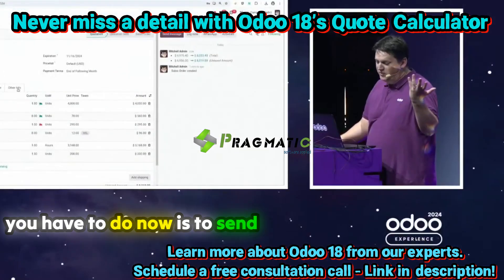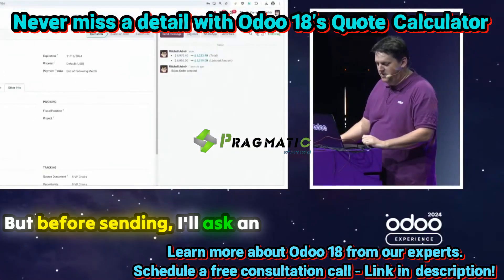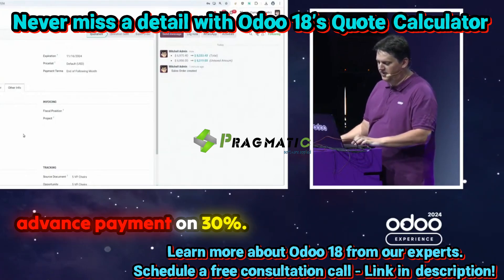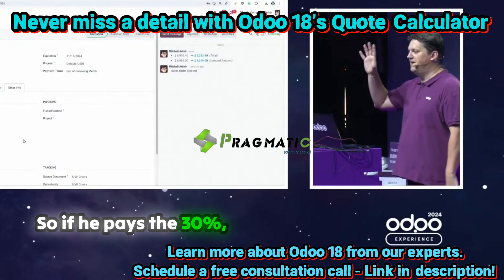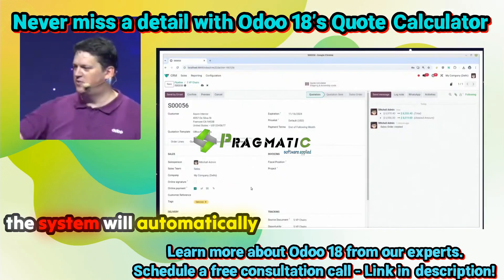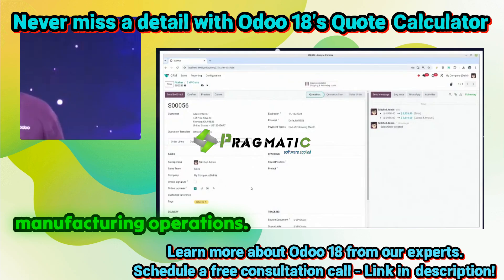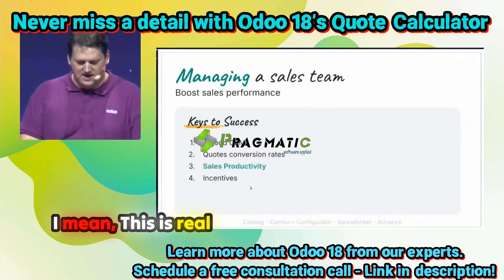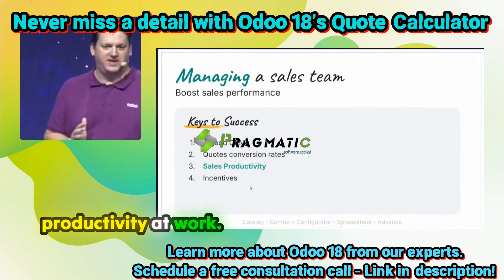All you have to do now is send to the client. But before sending, I'll ask for an advance payment of 30%. So if the client pays the 30%, the system will automatically trigger inventory and manufacturing operations. This is real productivity at work.